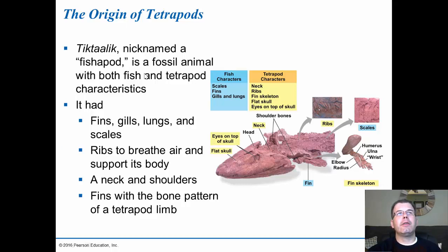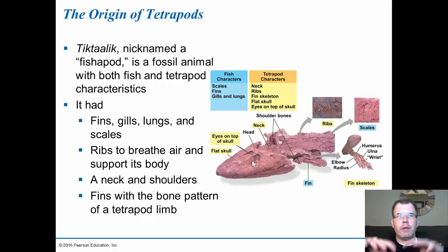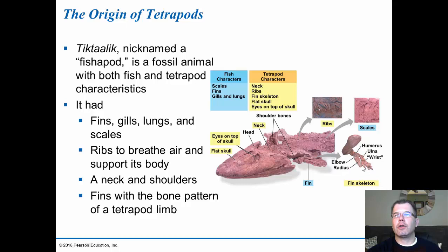The Tiktaalik — the 'fishapod' — showed both fish and tetrapod characteristics. It still had scales and fins, had gills plus lungs, but also showed tetrapod characters: a neck, ribs, fin skeleton, flat skull, and eyes on top of the skull rather than the sides, which improved forward predation. It had fins, gills, lungs, and scales; had ribs to breathe air and support its body — a major advantage; a neck and shoulders; and fins with a bone pattern of a tetrapod limb. You could see a short humerus, the ulna, and the beginning of phalanges starting to develop outside the fins — actual digits forming with these limbs.